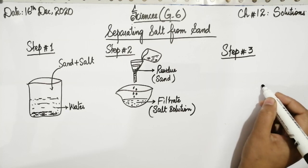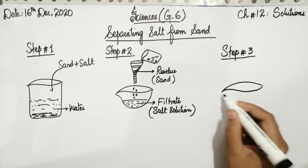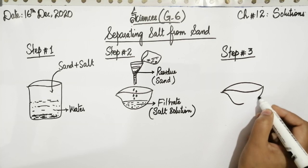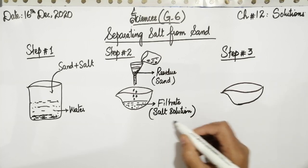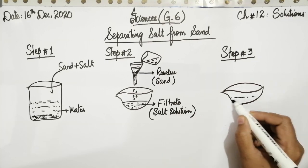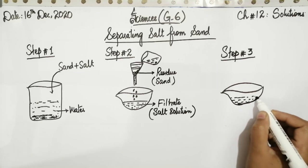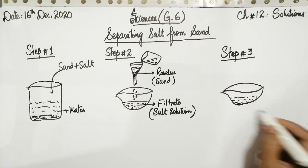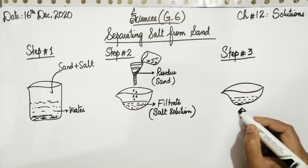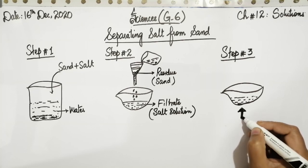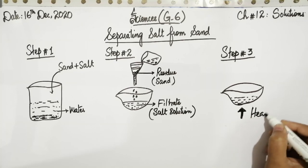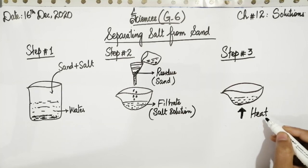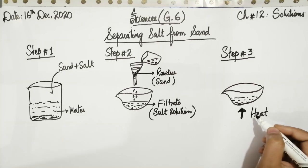How is it possible? You have to put the evaporating dish with the content of the filtrate, that is the salt solution, over the flame of the Bunsen burner. Heat is provided to the process. Now, after heating,